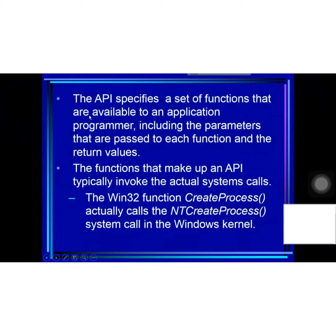The API specifies a set of functions that are available to an application programmer, including the parameters that are passed to each function and the return values the programmer can expect.